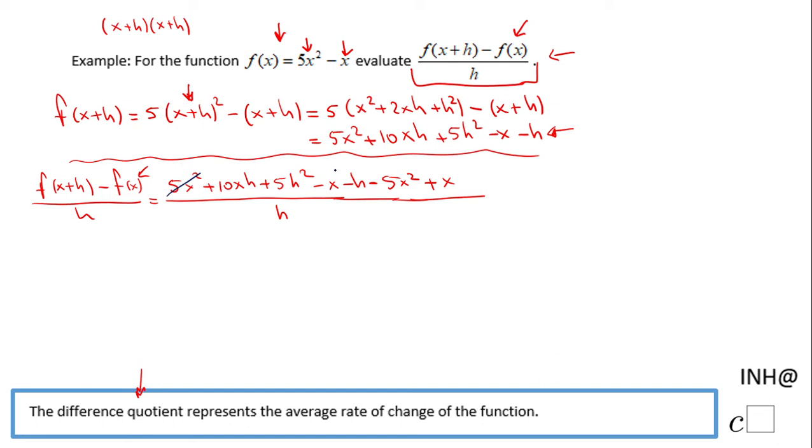This 5x squared and this minus 5x squared cancel out. This minus x and this x cancel out. So the thing that we have left is 10xh plus 5h squared minus h over h. And you notice we can factor out h from the numerator of this fraction.